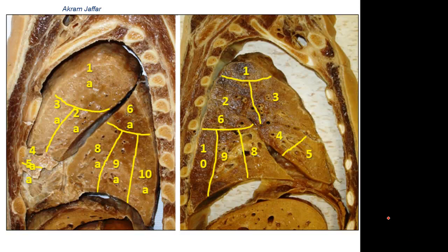The names of the segments in the upper lobe are apical, anterior, and posterior. In the middle lobe, we have medial and lateral.